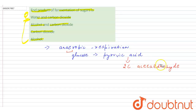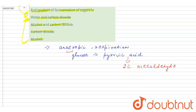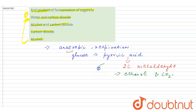So in this anaerobic respiration, pyruvic acid is converted into two-carbon acetaldehyde, and then this two-carbon acetaldehyde is converted into ethanol along with the production of carbon dioxide.